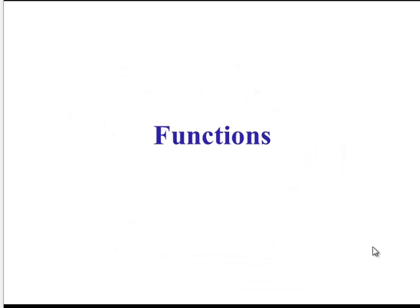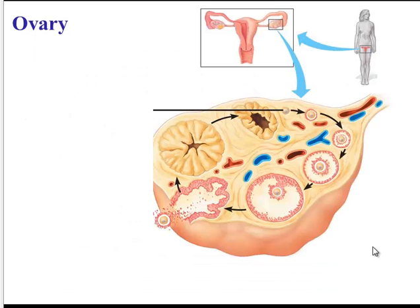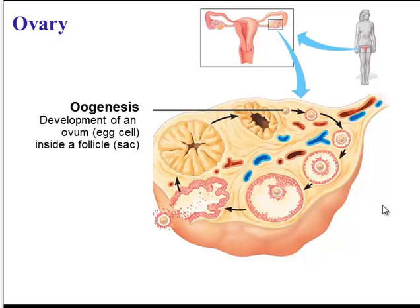So now that we know the structures, let's explore their functions. Starting with the ovary, where something very important happens — a process known as oogenesis. Oogenesis is simply the production of an egg cell. The fancy term for an egg cell is ovum, and an egg cell is produced within the ovary within sacs called follicles. Here we can see a small follicle with an egg cell inside, and over time that egg cell will develop.